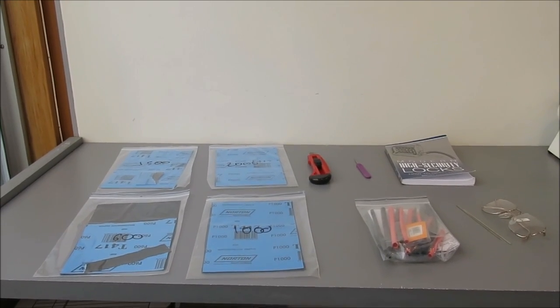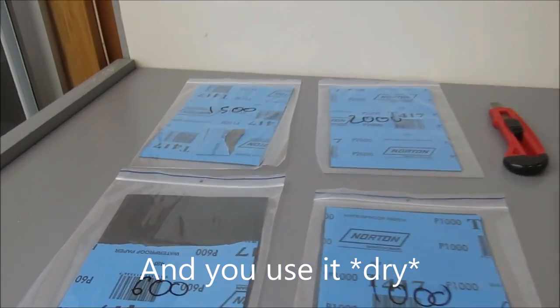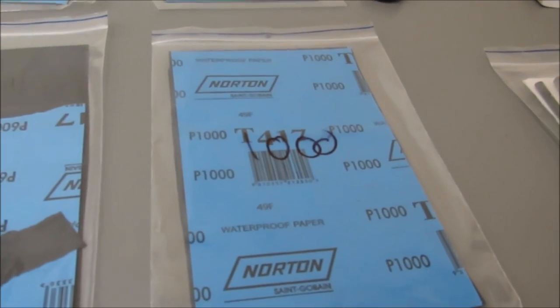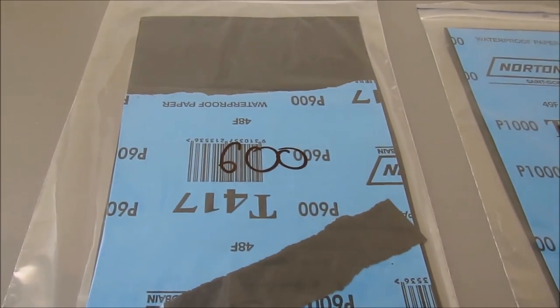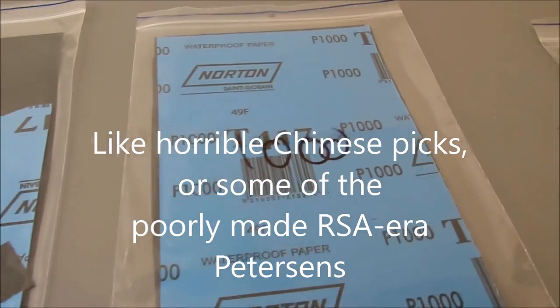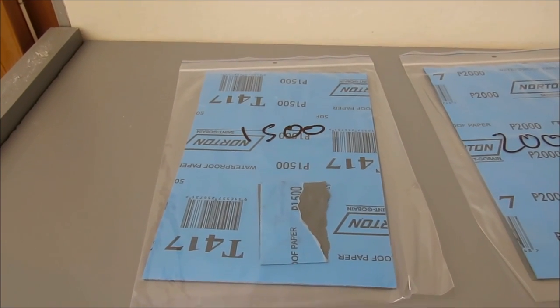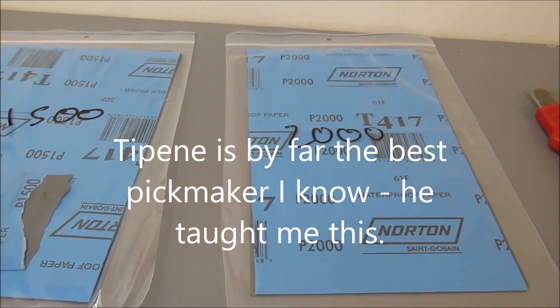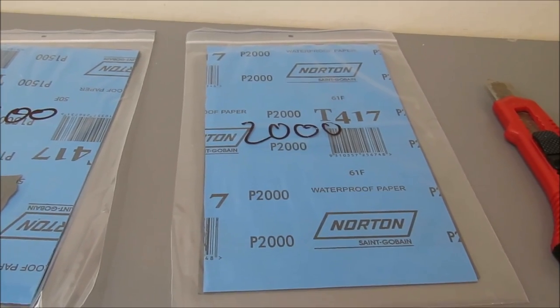What do you need? The mainstay is wet and dry sandpaper. You can get this in a million different grades. You are not going to need to go much below 1,000, but I like to have one slightly coarser one just to do real rough stuff. So, 600 and 1,000, 1,500, and the secret is that one there, the 2,000. That stuff is super fine, and that gets you the polish and the finish that you need.